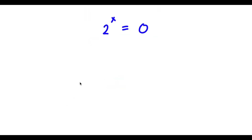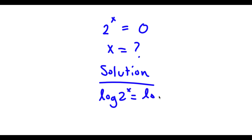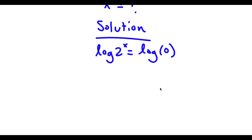Alright, so now I have 2 to the power of x is equal to 0. The first thing I'm going to do to solve this is take the log on both sides, because we're trying to find the value of x. So if I take the log on both sides, I get log of 2 to the power of x is equal to log of 0. An important property of logarithms is that if I have log of a to the power of b, I can move the exponent b to the front.